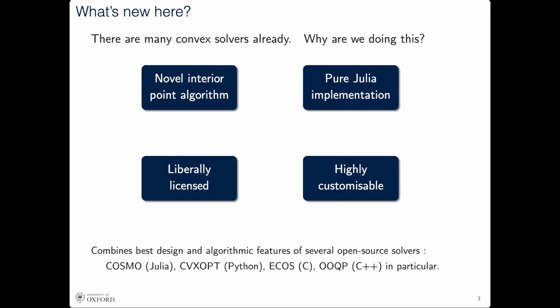What we did was take the best design features from other solvers we were familiar with. We've taken ideas from the Julia code Cosmo, which is a first-order solver; from CVXOpt and ECOS, which are interior point solvers in Python and C; and from the high-level design ideas of OOQP, which is a C++ QP solver.